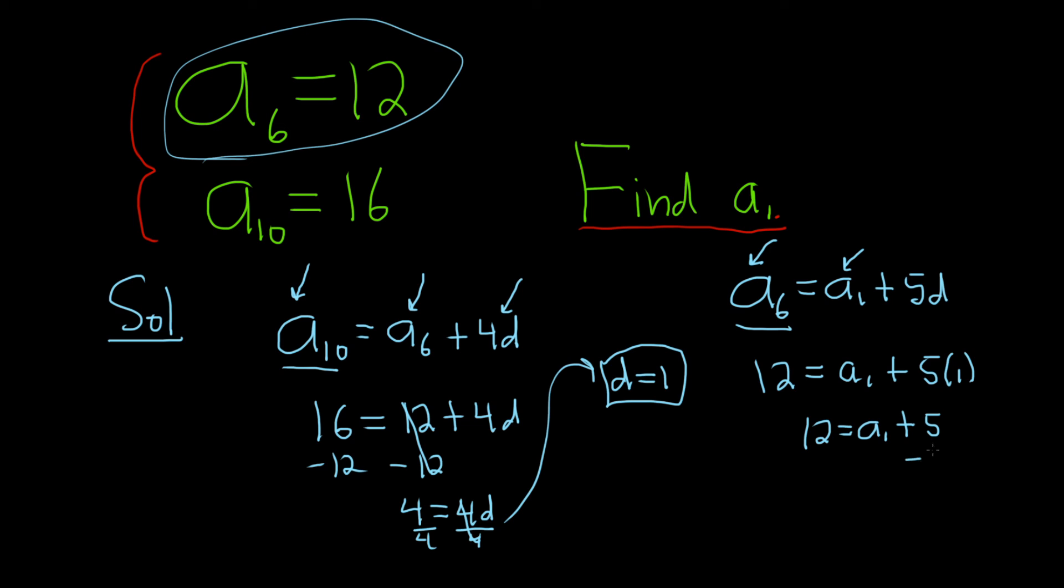So we have 12 equals a sub 1 plus 5. Now we can subtract 5 from both sides, and that gives us 7 equals a sub 1. And that would be the first term. I hope this video has been helpful.